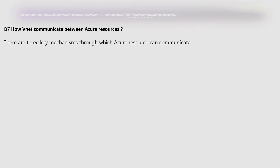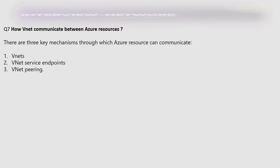How does VNet communicate between Azure resources? There are three key mechanisms through which Azure resources can communicate: 1) VNets, 2) VNet service endpoints, and 3) VNet Peering.